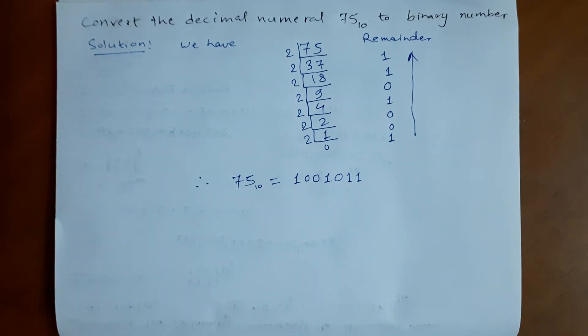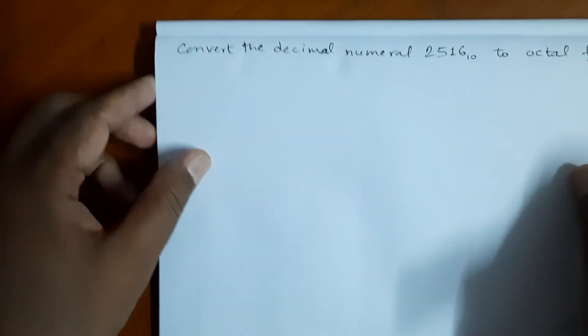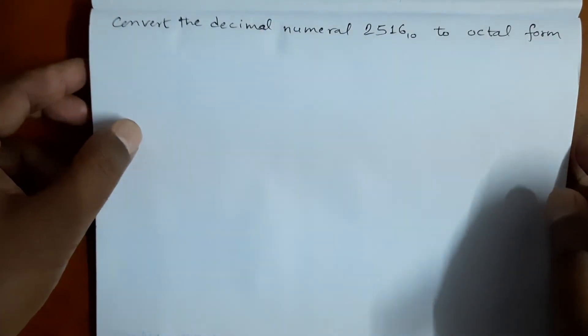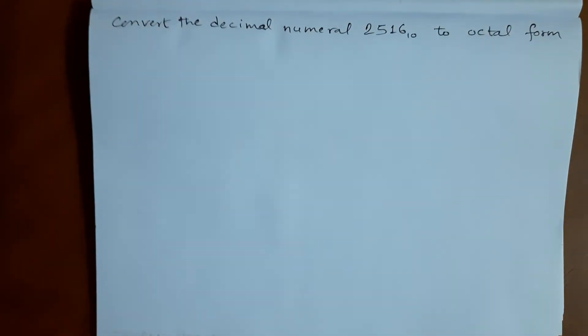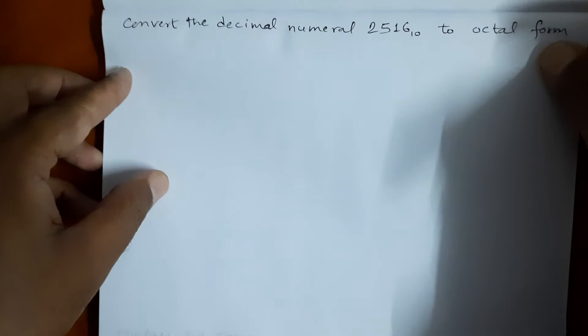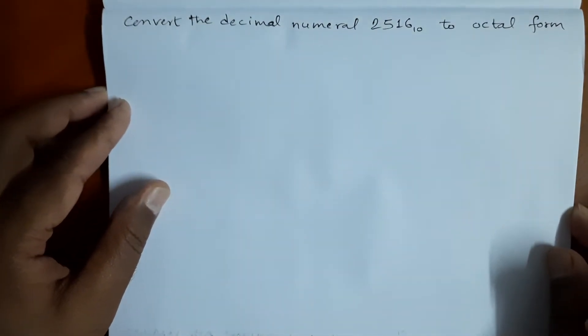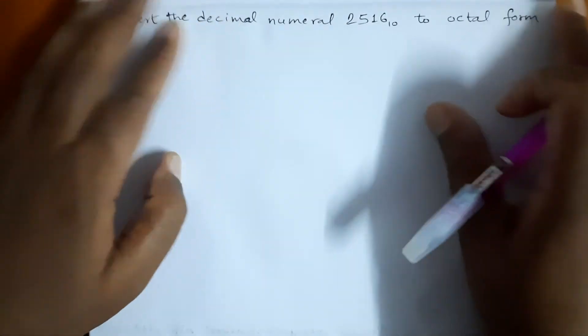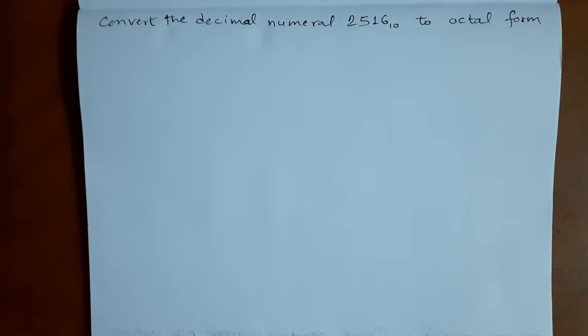Similarly, we have another decimal number: 2516, and we have to change this into octal form. Octal form means the number uses 8 digits, 0 to 7. To change into octal number we divide by 8, because dividing by 8 always gives a remainder from 0 to 7, so we get the number in octal form.